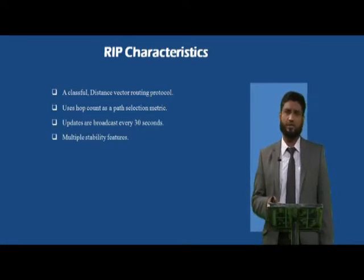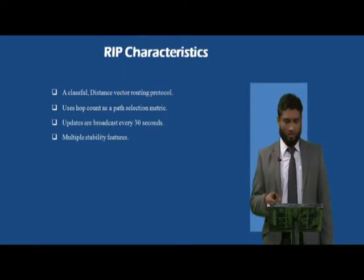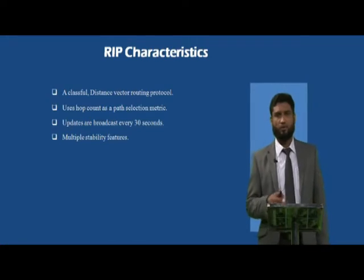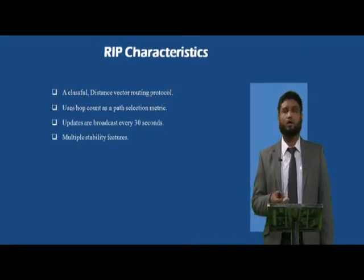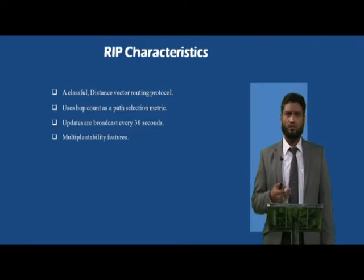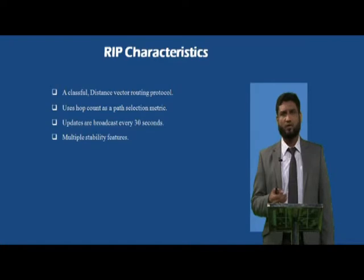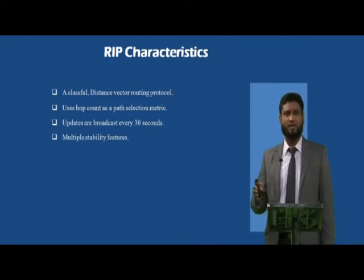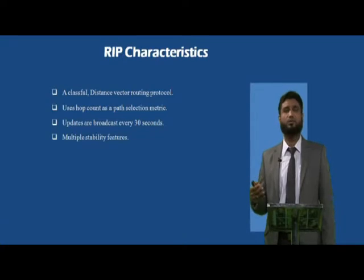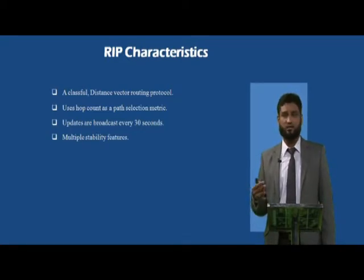There are two types: RIP version 1 and RIP version 2. RIP uses hop count as its metric to measure destination networks. The maximum hop count is 15. When routing information is updated from one router to another, it starts at 0 and increments by 1 with each forward. If the hop count exceeds 15, it is considered infinite and will not be valid — it is dropped from the routing table.